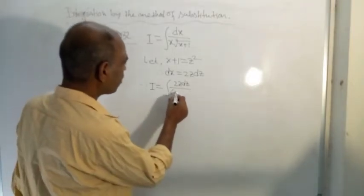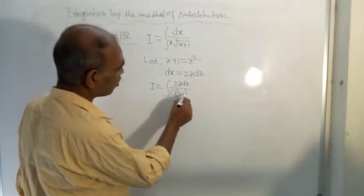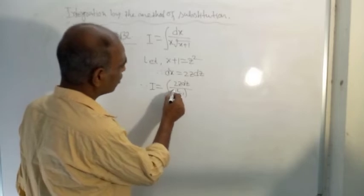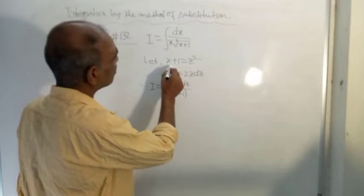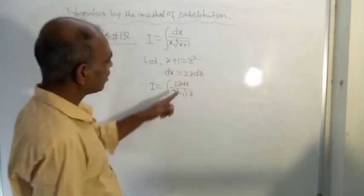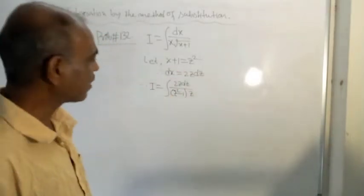So z squared minus 1 in the denominator. And root of x plus 1 equals z. This z and this z are cancelled.